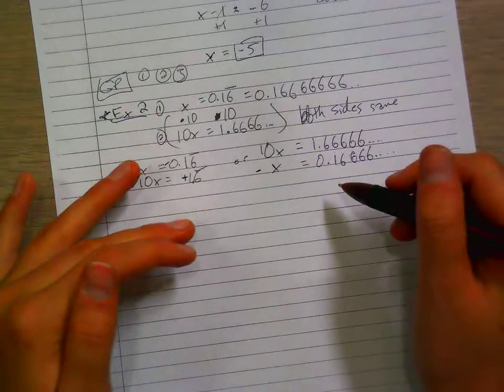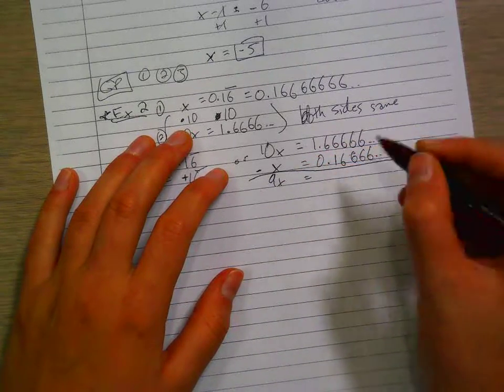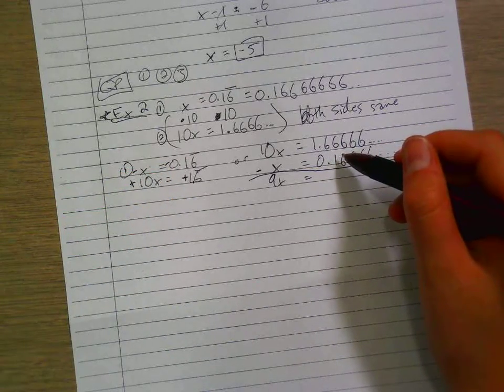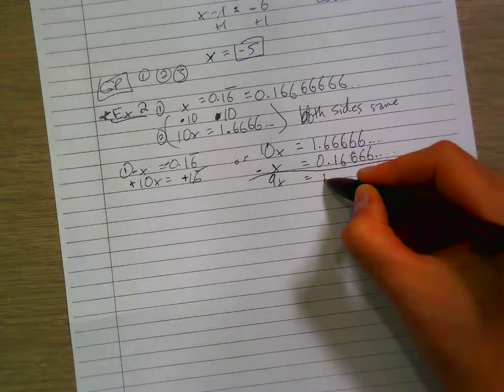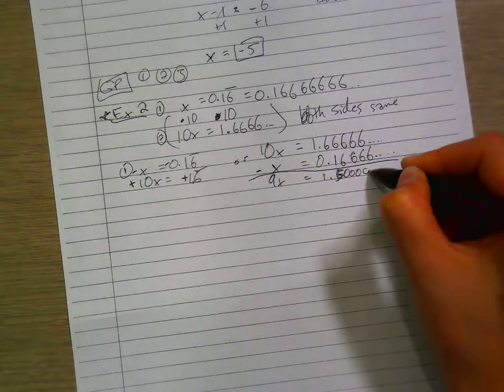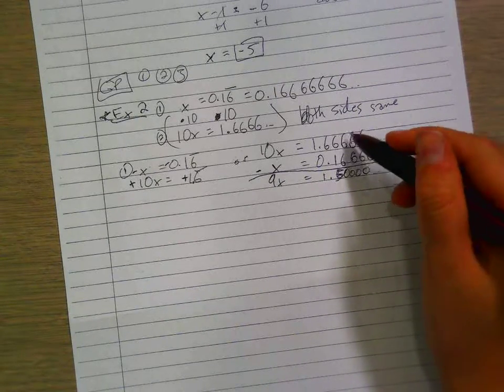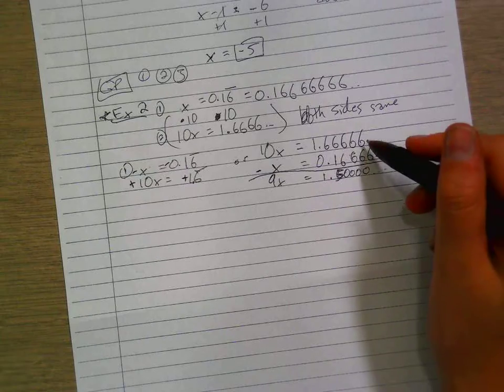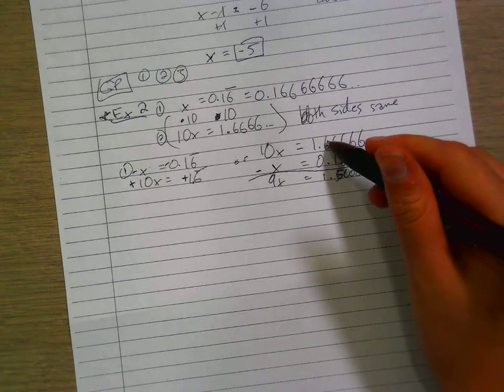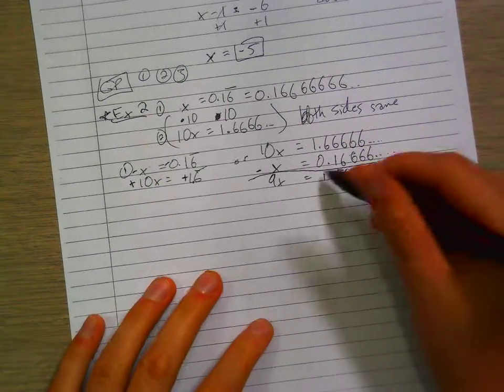x and 0.16666 repeating. Now we're going to subtract these. So 10x minus x gives us 9x, and 1.6 repeating minus 0.16 repeating gives us 1.500000. So for subtracting all the 6's, 6 minus 6 is 0. The ones finally line up, 6 minus 1 is 5, and then 1 minus 0 is 1. So that can give us what 9x is equal to.